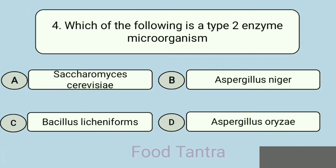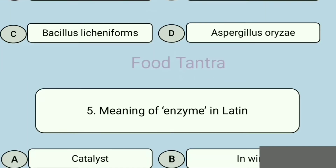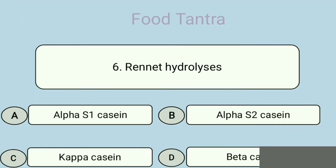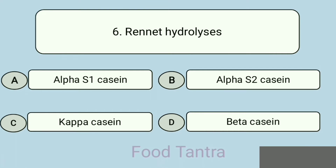Option B: Aspergillus niger. Option C: Bacillus licheniformis. Option D: Aspergillus oryzae. Answer: Saccharomyces cerevisiae. Question 5: What is the meaning of 'enzyme' in Latin? Option A: Catalyst. Option B: In wine. Option C: In yeast. Option D: Digest. Answer: In yeast.